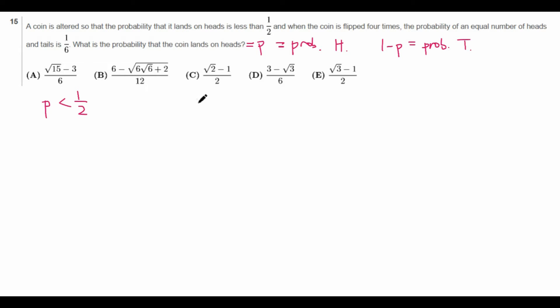If we flip the coin four times and there's an equal number of heads and tails, then that means it must be, for example, heads, head, tail, tail. But not only can it be this, it can also be any permutation of this that makes it a different ordering.